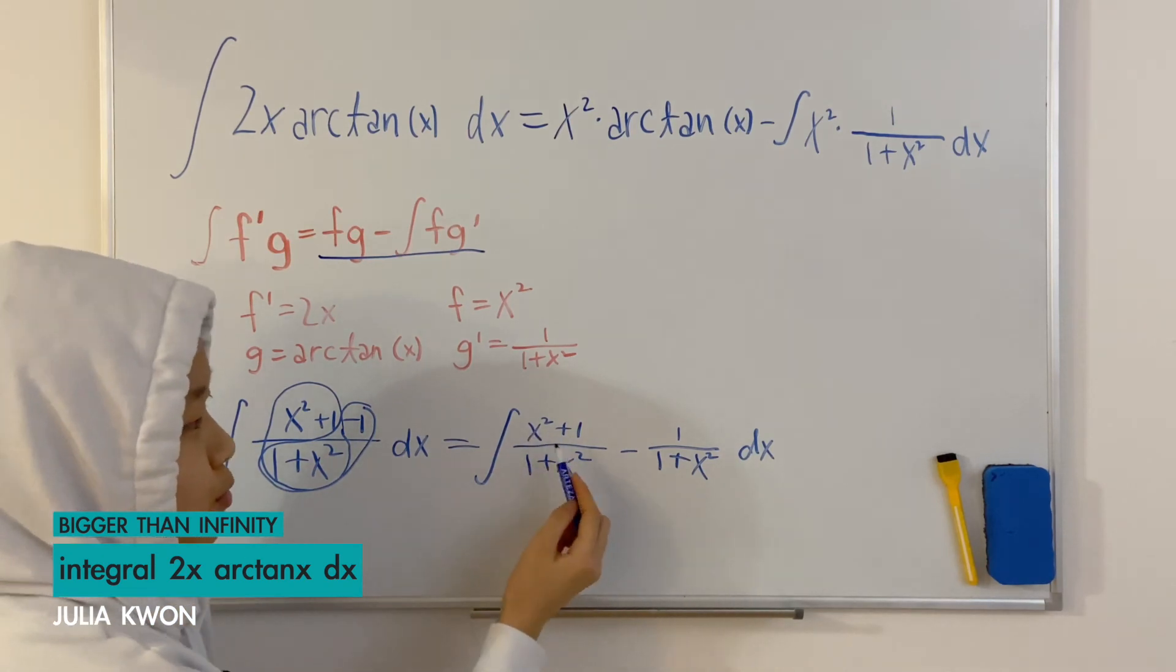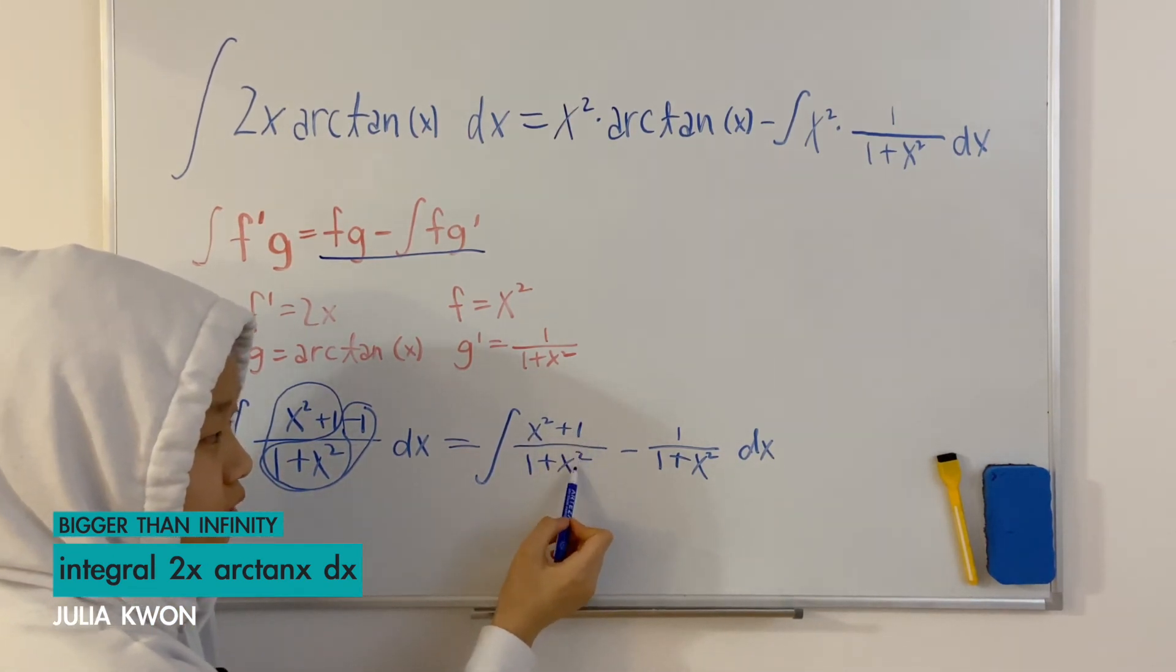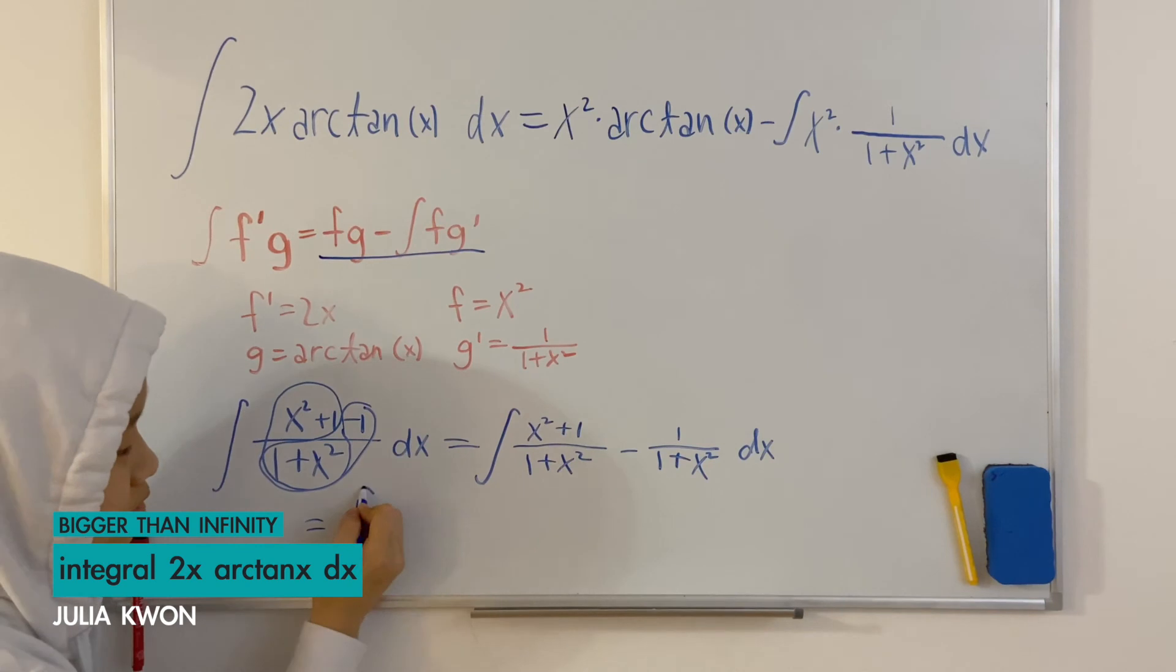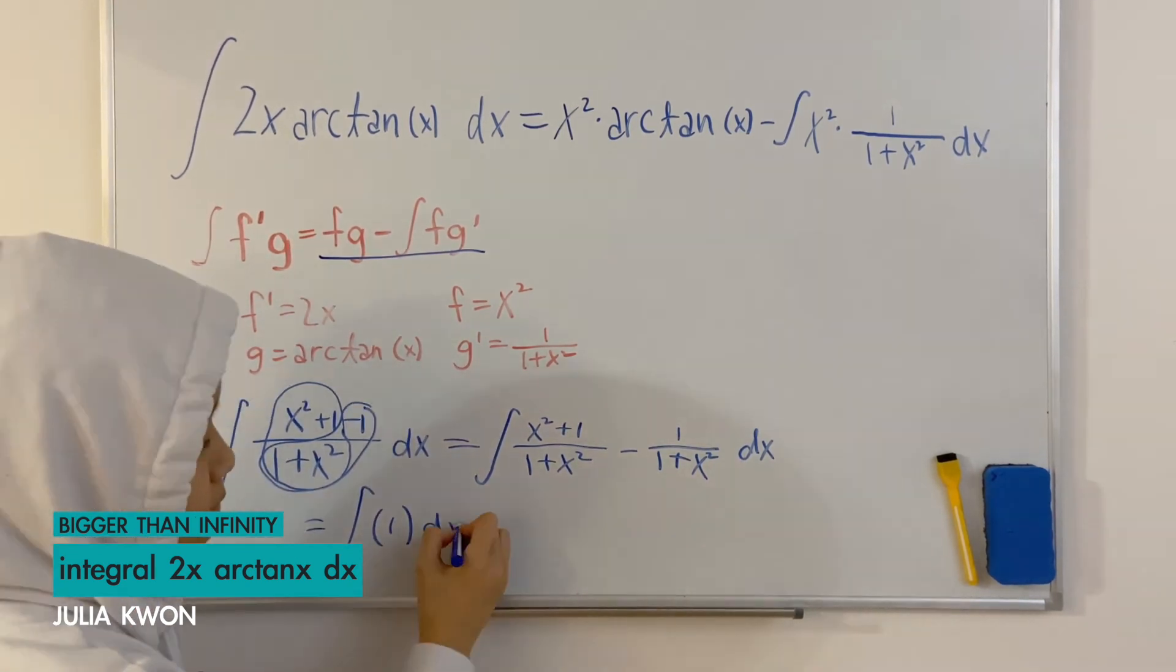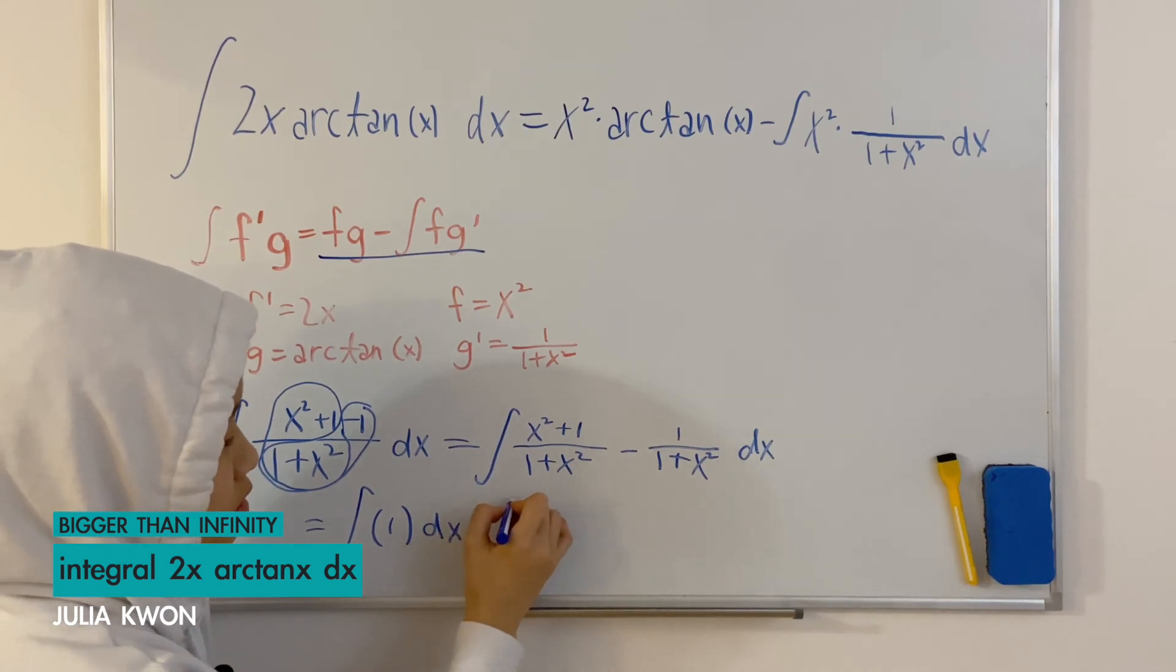This is just 1 right because we have the same numerator in the denominator so just 1 dx minus the integral.